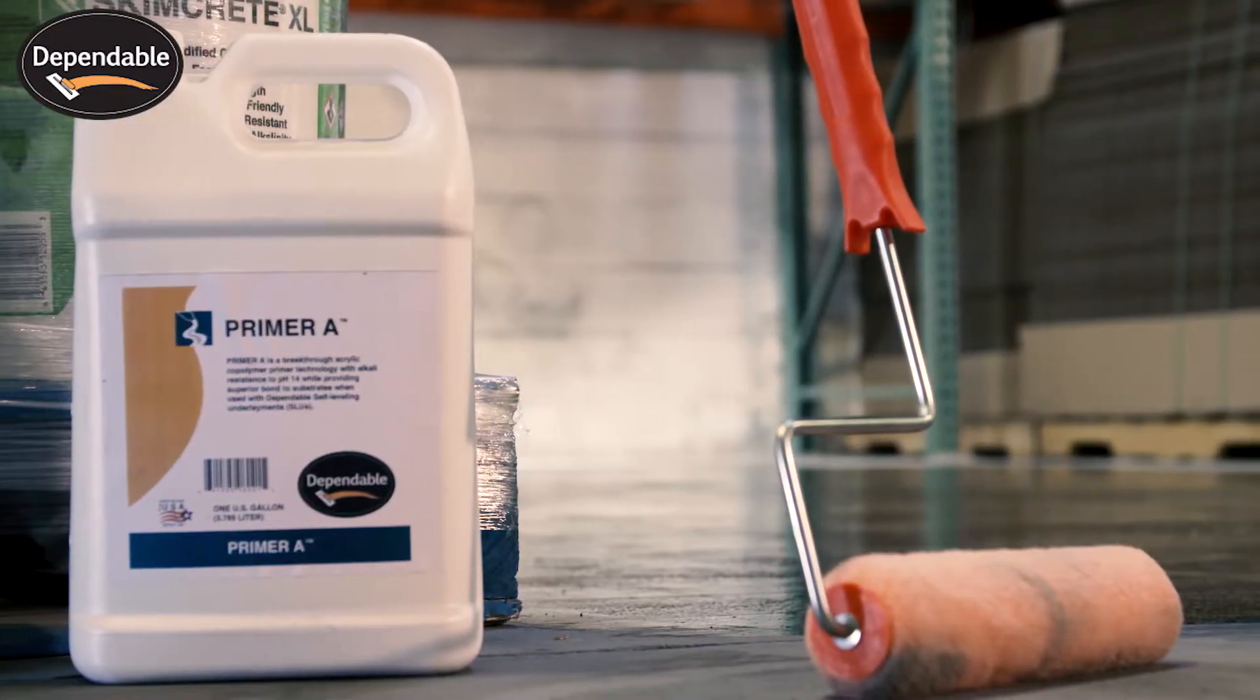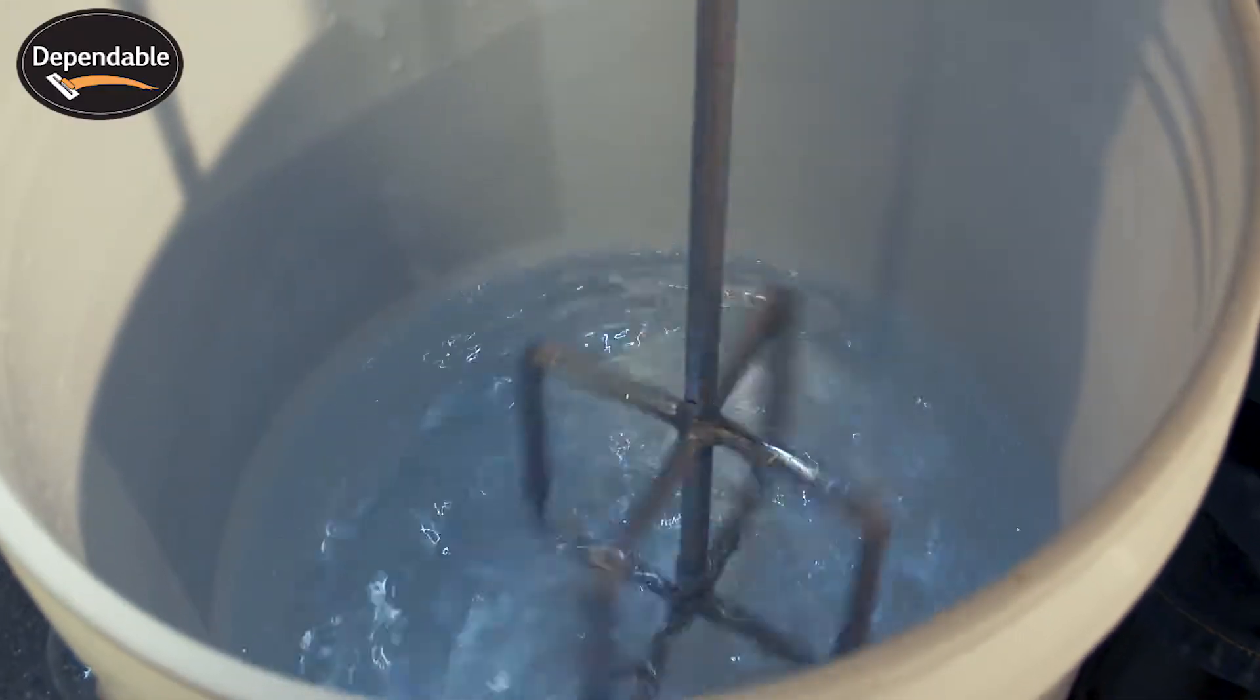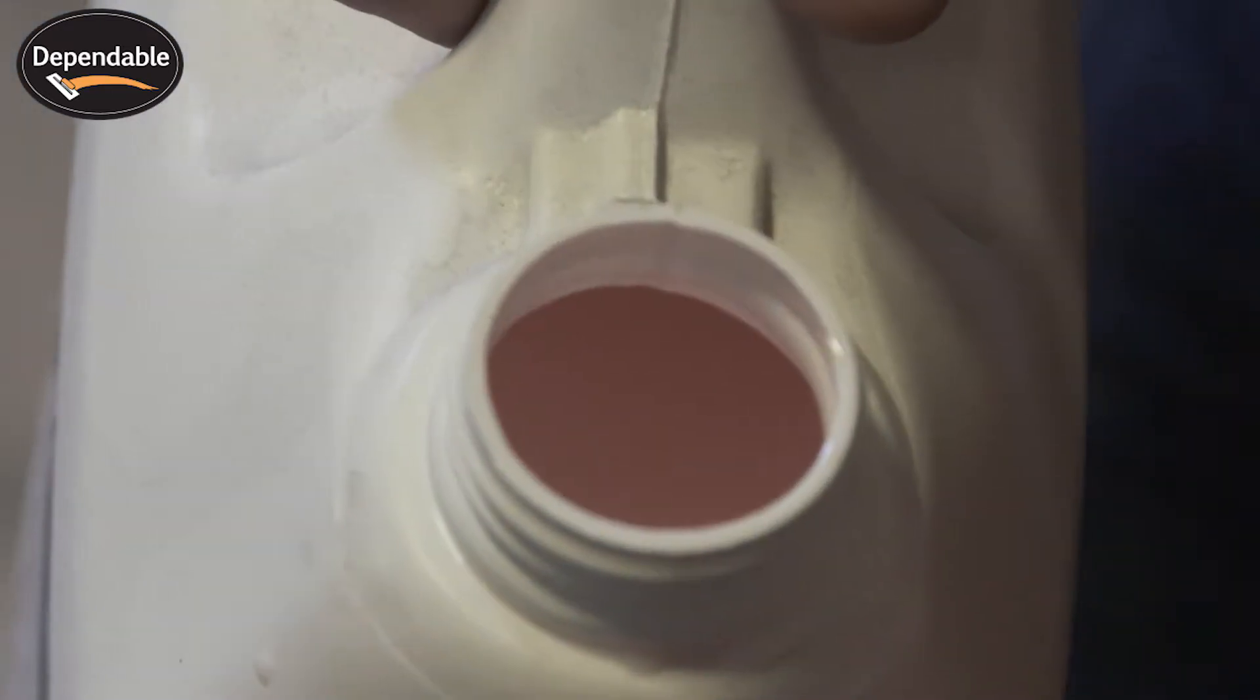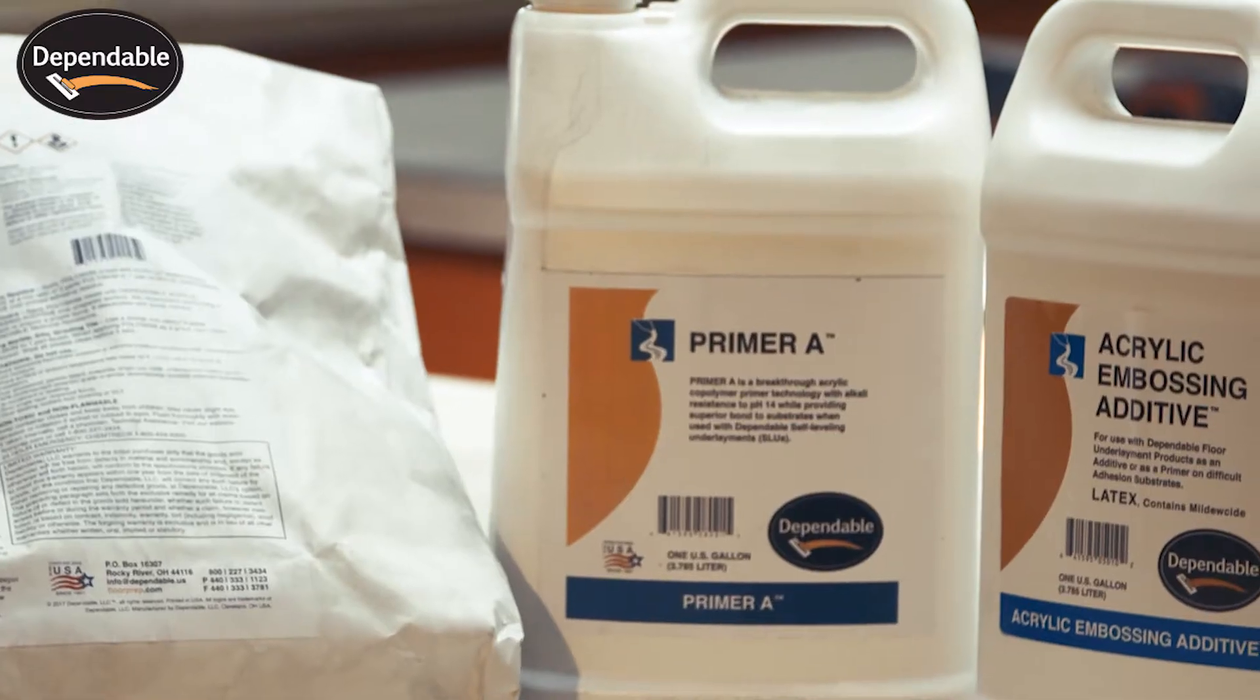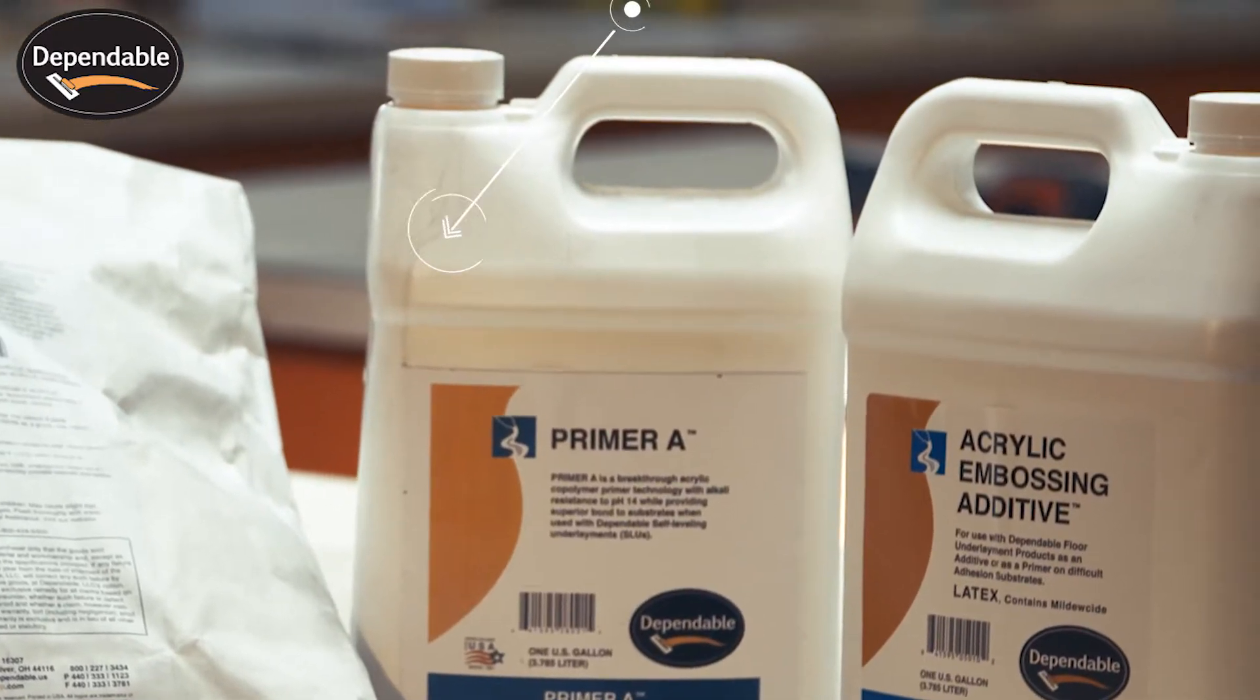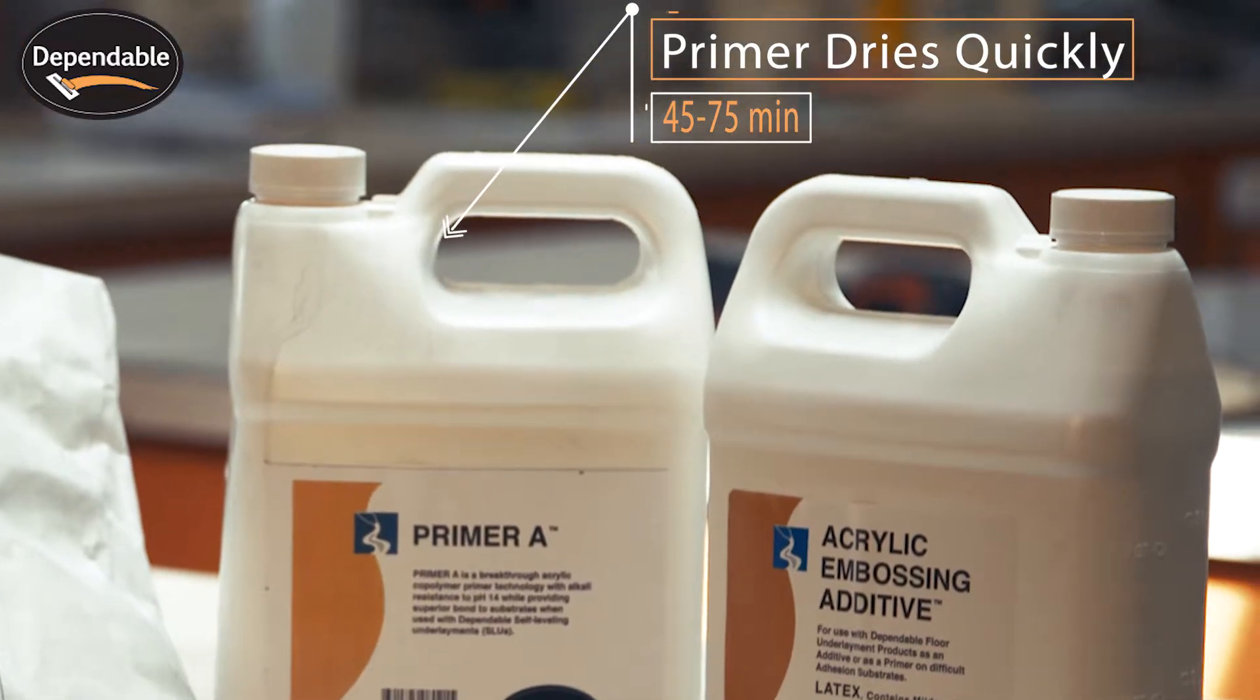Always use Primer A when priming and dilute with water, typically in the range of 10 to 3 parts water to 1 part primer. Spread the primer with soft tip brooms. Primer dries quickly and is typically ready for the installation of the underlayment 45 to 75 minutes after application.